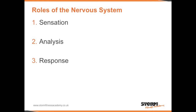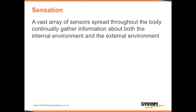The nervous system has three roles: Sensation, Analysis, and Response. Sensation — a vast array of sensors spread throughout the body continually gather information about both the internal environment and the external environment, such as smell, taste, touch, sight, and hearing.